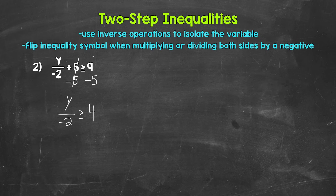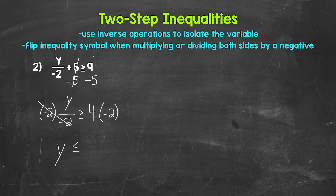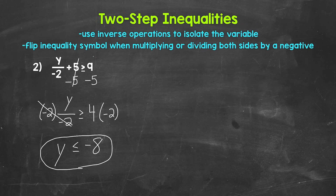So now we have y divided by negative 2 is greater than or equal to 4. Since y is being divided by negative 2, we undo that division using multiplication. Multiply the left side by negative 2, and multiply the right side by negative 2 as well. Remember, when we multiply or divide both sides of an inequality by a negative, the inequality symbol flips — it changes direction. These negative 2s cancel each other out, y is now isolated, the inequality symbol flips, and 4 times negative 2 gives us negative 8. So y is less than or equal to negative 8.